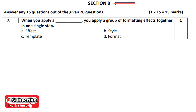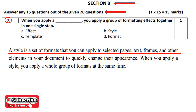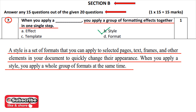Section B covers subject-specific skills — 15 questions out of 20. Question 7: When you apply a dash, you apply a group of formatting effects together in a single step. A style is a set of formats which we can apply to pages, text, frames, and elements in our documents to change their appearance. The answer is option B: style, because when we apply style, we can do a whole group of formatting effects at the same time.